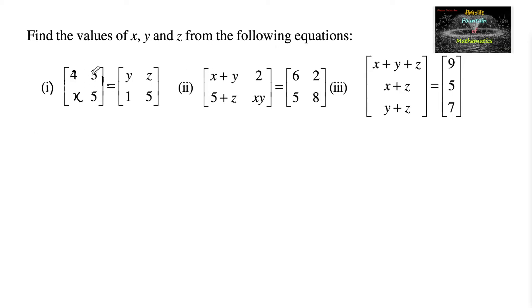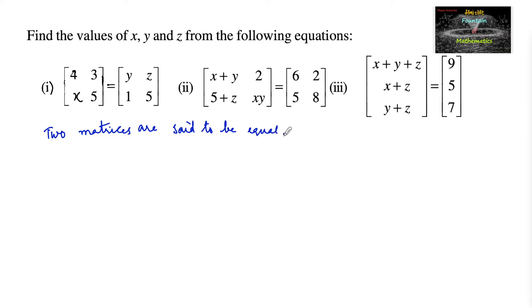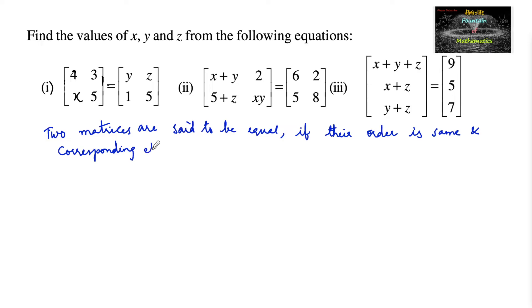The first equation has matrix entries 4, 3, x, 5 on one side and y, z, 1, 5 on the other. We know that two matrices are said to be equal if their orders are the same and corresponding elements must be equal.